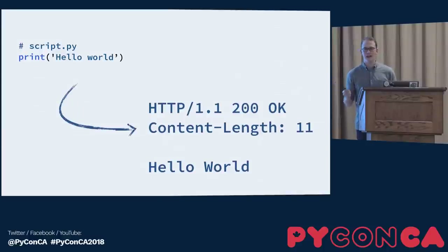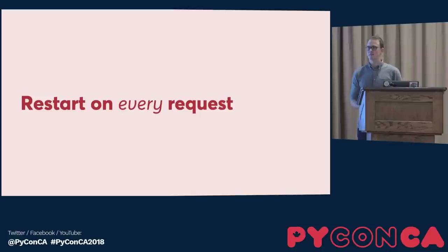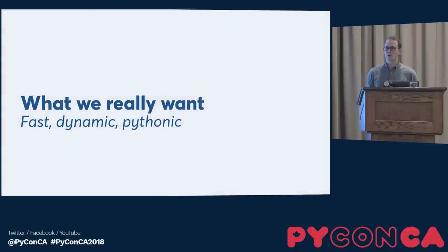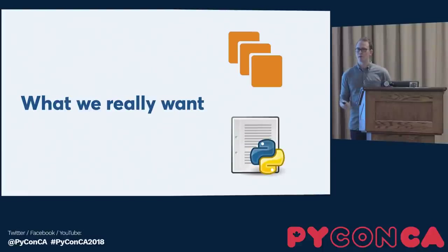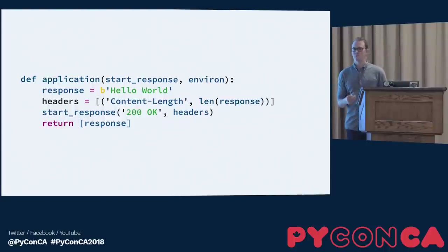CGI had a limitation: you were forced to restart on every request. For Python, that means starting the whole interpreter up, and even a few hundred milliseconds adds up across every request. What we really want is something fast, dynamic, and Pythonic — a separate web server and a separate Python application that we can pass requests into and get responses back. That is the purpose WSGI was seeking to fill: define a simple callable that takes requests as they come and sends back responses, without rebooting the Python server each time.